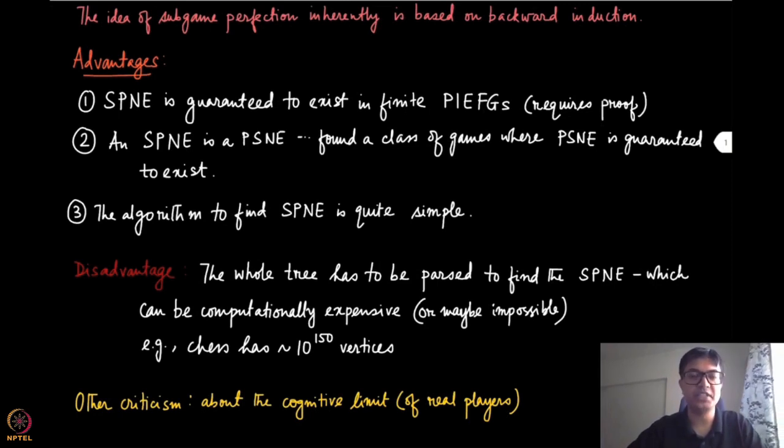So for small games like tic-tac-toe, we can actually list down, it does not have too many vertices in the game tree. We can do that and find the SPNE, and it will be a good exercise to do and find out that this SPNE is nothing but the draw guarantee strategy for both these players. So we know that there exists a strategy which guarantees the draw for both these players, and that will emerge as the SPNE of this PI-EFG.